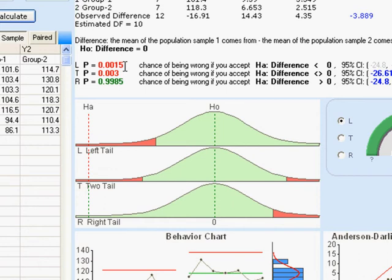However, if we want to assert that group two is greater than group one or that group two and group one are different from each other, we've got a very small probability of being wrong and we can accept that.